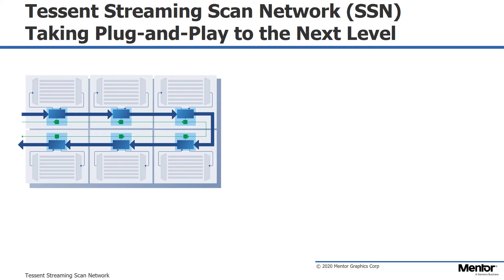The Tessent Streaming Scan Network, or SSN, is a new approach to distribute scan test data across an SOC. In this example we see a design with six cores and an SSN bus. The SSN bus is a high-speed synchronous bus that delivers packetized scan test data to the cores. Part of the SSN network is what we call a host node in each core. This host node ensures that the right data is picked up from the SSN bus and sent to the scan inputs of the core — compressed, uncompressed, or a combination of both — and also ensures that scan output data is placed back onto the bus.